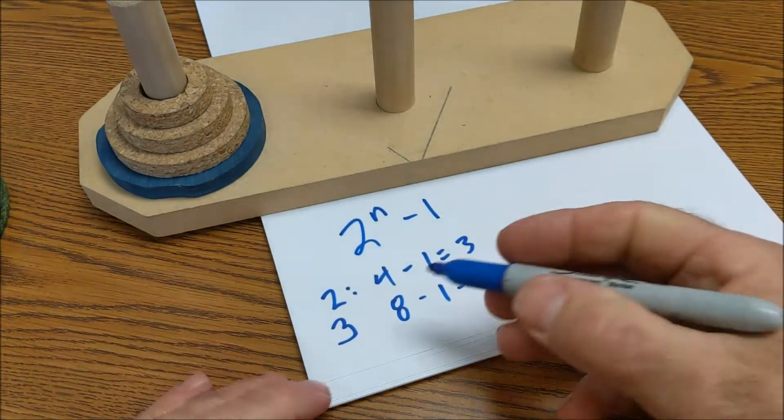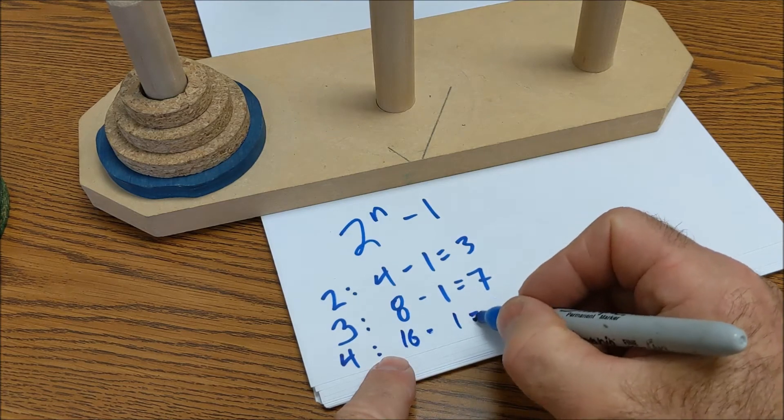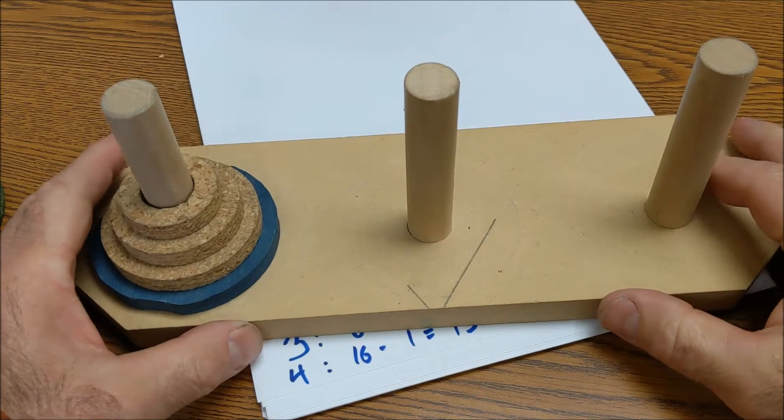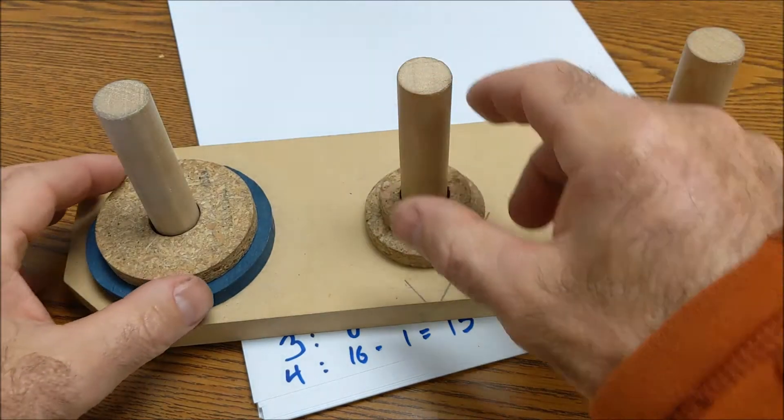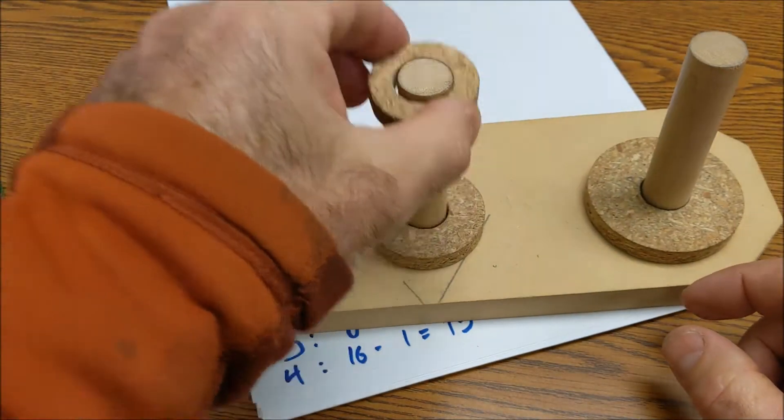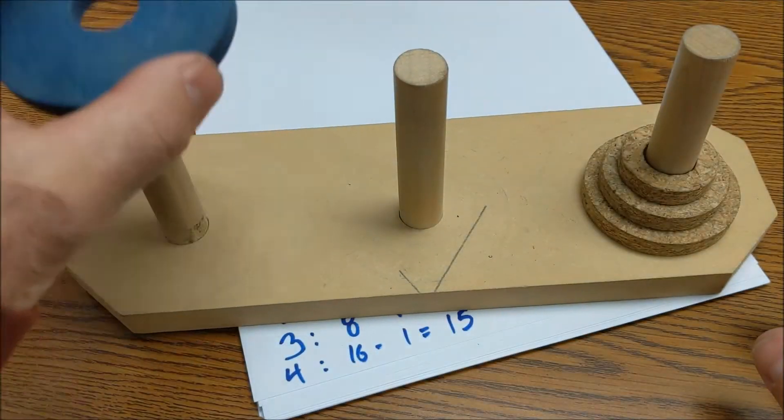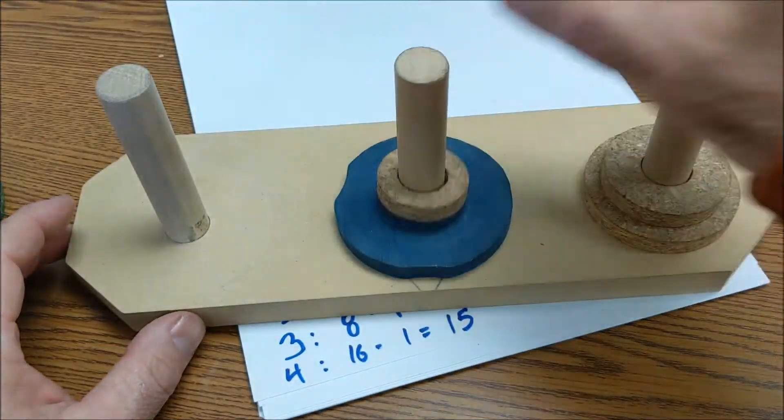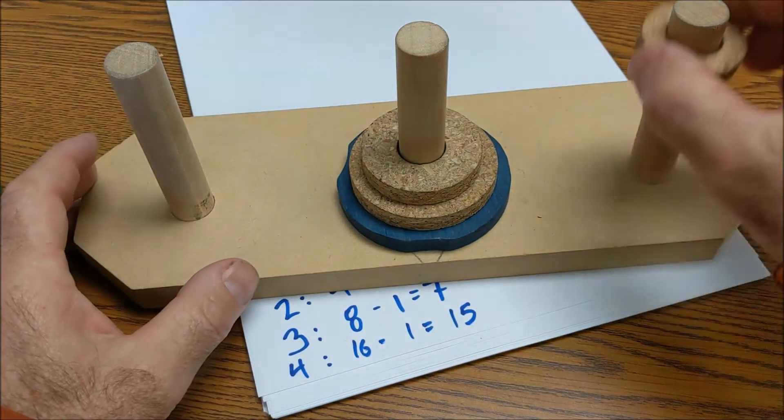So with four disks, I have 2, 4, 8, 16. Sixteen minus 1, I should be able to do it in fifteen ways. So let's see if I can do it in fifteen ways or less. One, two, three, four, five, six, seven, eight, nine, ten, eleven, twelve, thirteen, fourteen, fifteen.